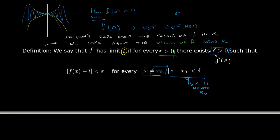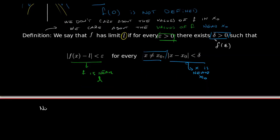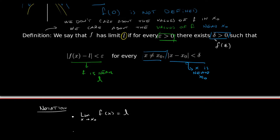To understand this definition: δ measures how near x is to x₀ — if |x - x₀| < δ, then x is near x₀. The condition x ≠ x₀ reflects the fact that we don't care about f(x₀) itself. And ε checks how close our function is to the limit — if |f(x) - L| < ε, then f is near L. We can write this as: the limit as x tends to x₀ of f(x) is L, or equivalently, f(x) tends to L as x tends to x₀.